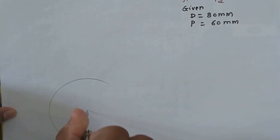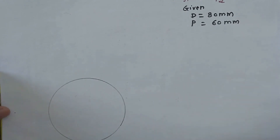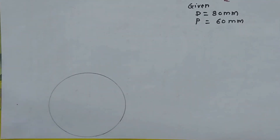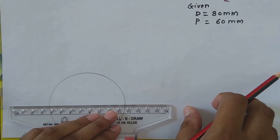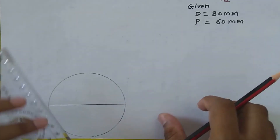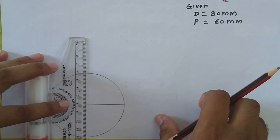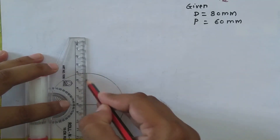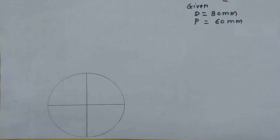I have drawn a circle with radius 40 mm. Now I have to divide this circle into equal parts — either 8 or 12. Here I will divide this circle into 8 parts. First dividing into two parts, then four parts, and then into eight parts with the help of a protractor.